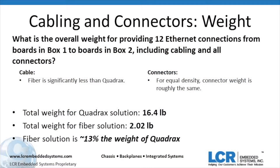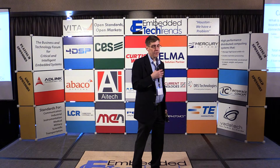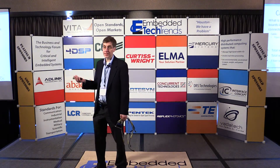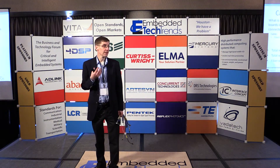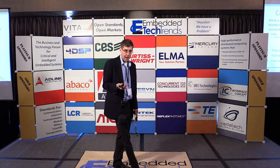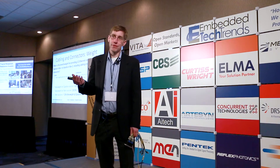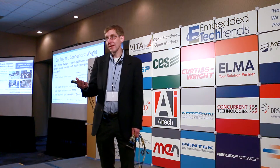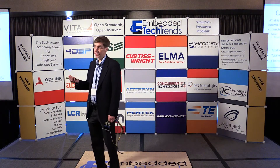Now let's look at weight. Fiber optics weighs about nothing. If you go to Carlisle, who makes a lot of this cable, they quote weight in terms of kilometers — this fiber weighs about 14.4 kilos per kilometer, so the weight is insignificant. Quadrax, because of the shielding, is a lot more. Connectors are about equal if you take into account the density. Adding up that configuration, the total weight of a Quadrax solution would be about 16.5 pounds and the total weight for a fiber solution is about 2 pounds. That's 14 pounds, which seems irrelevant in isolation, but when you think about the number of boxes on a plane or a ship, it comes out to significant weight savings.